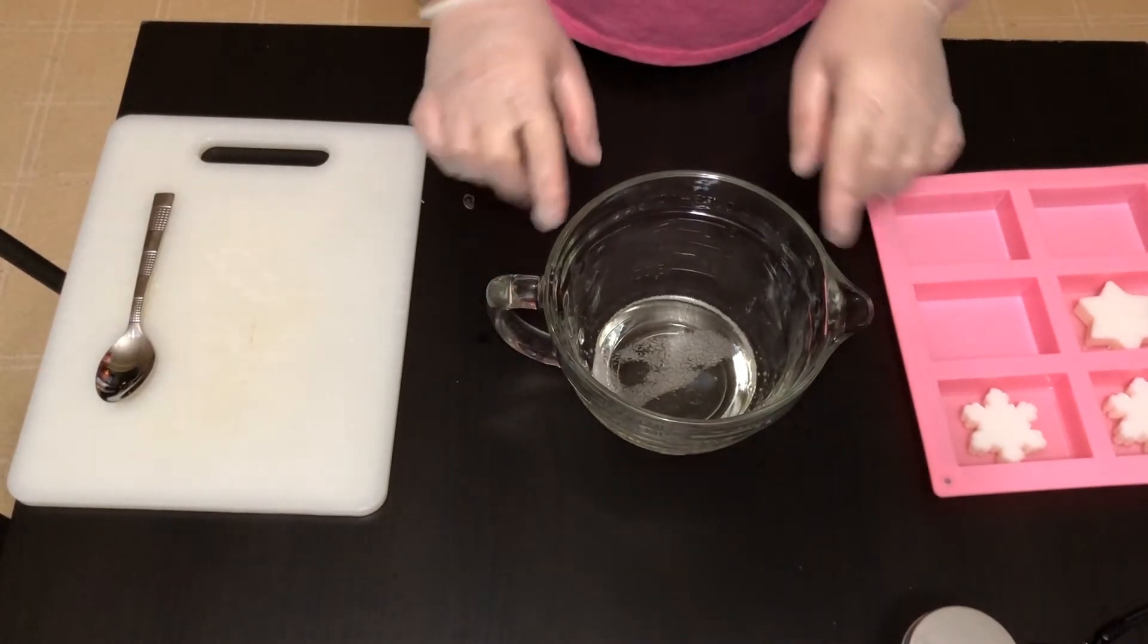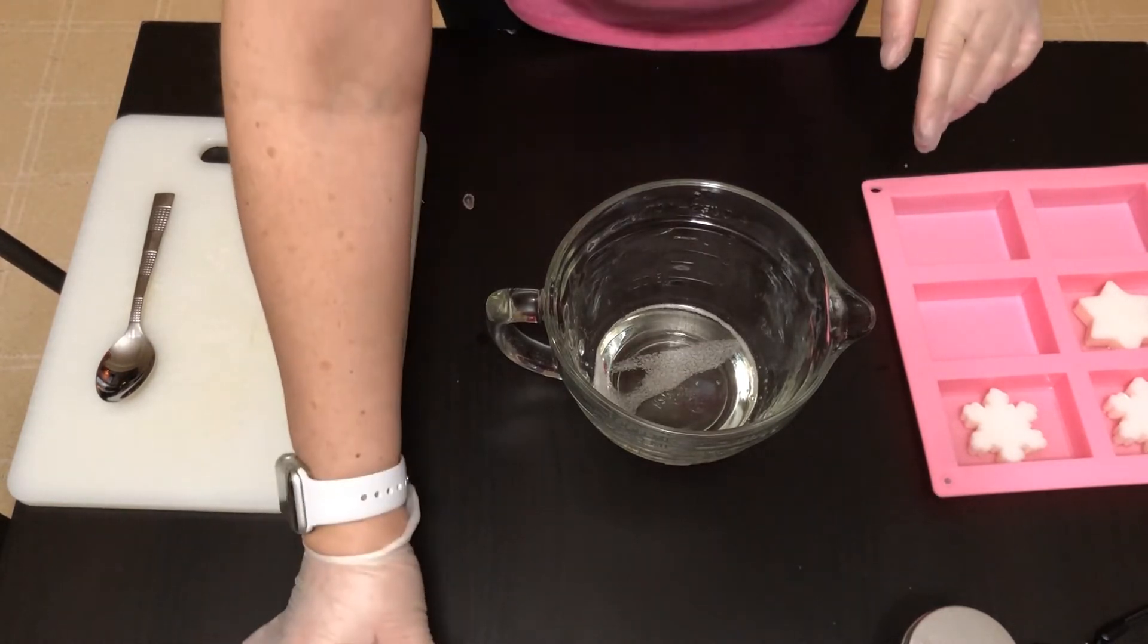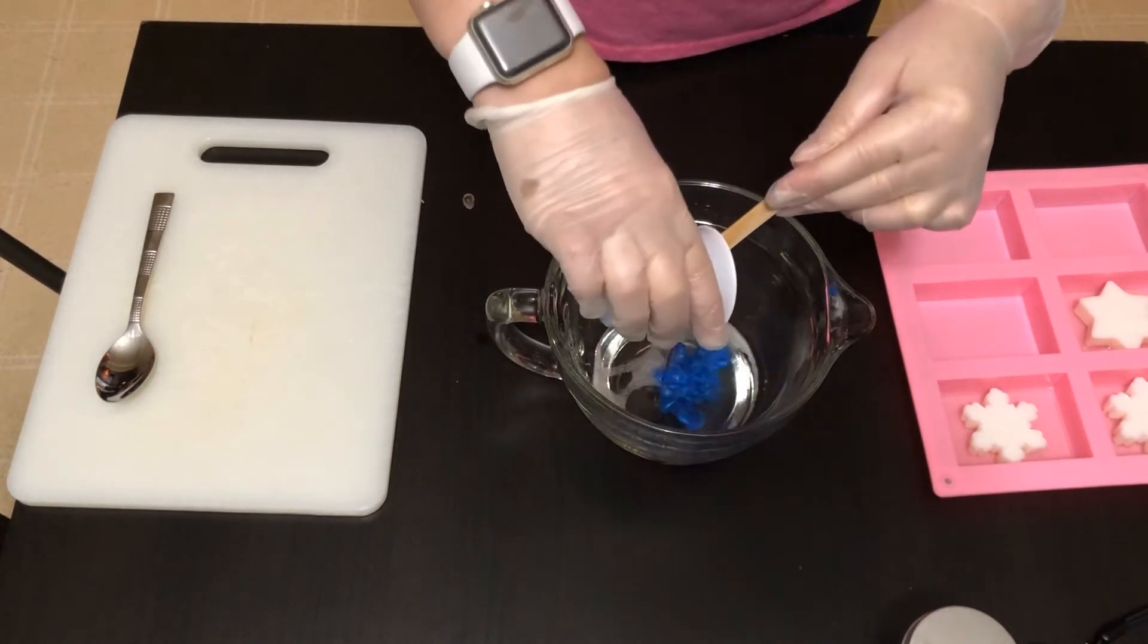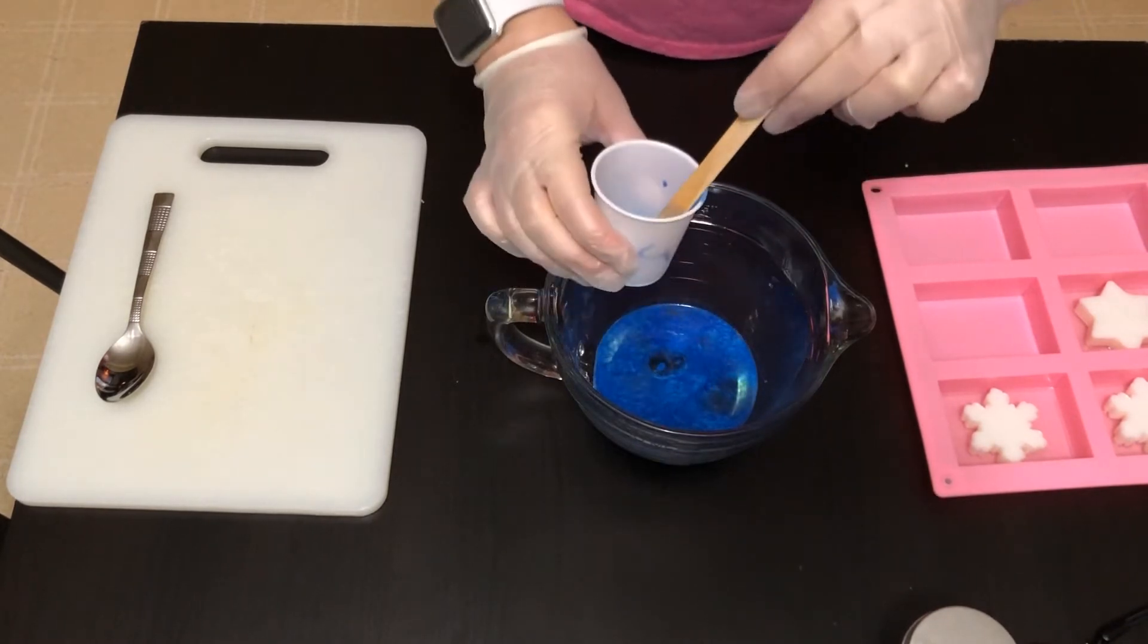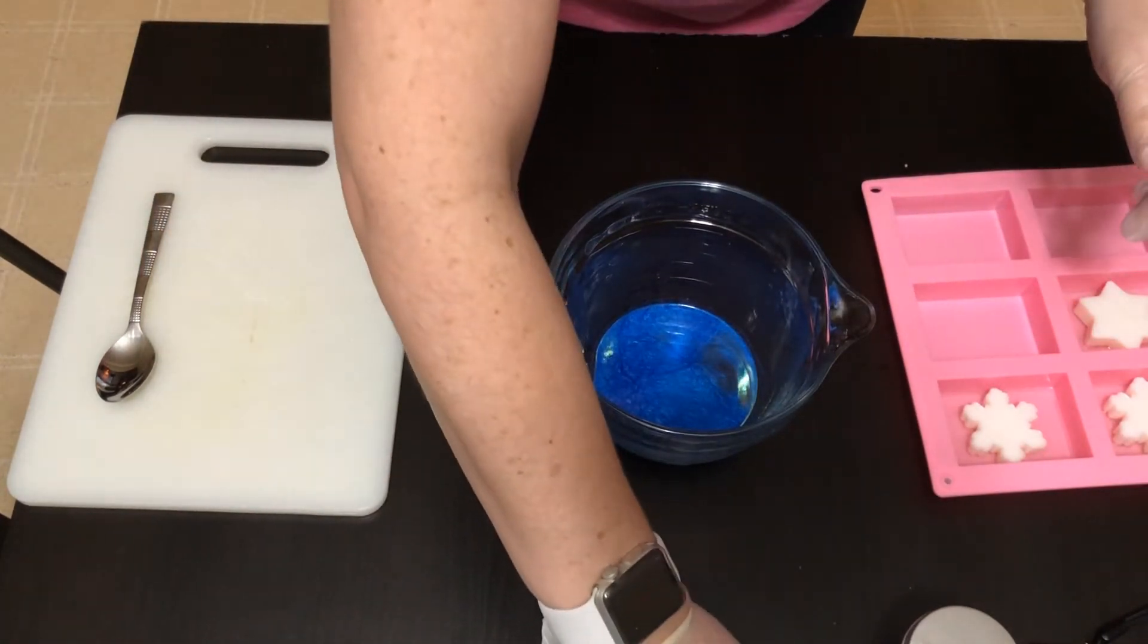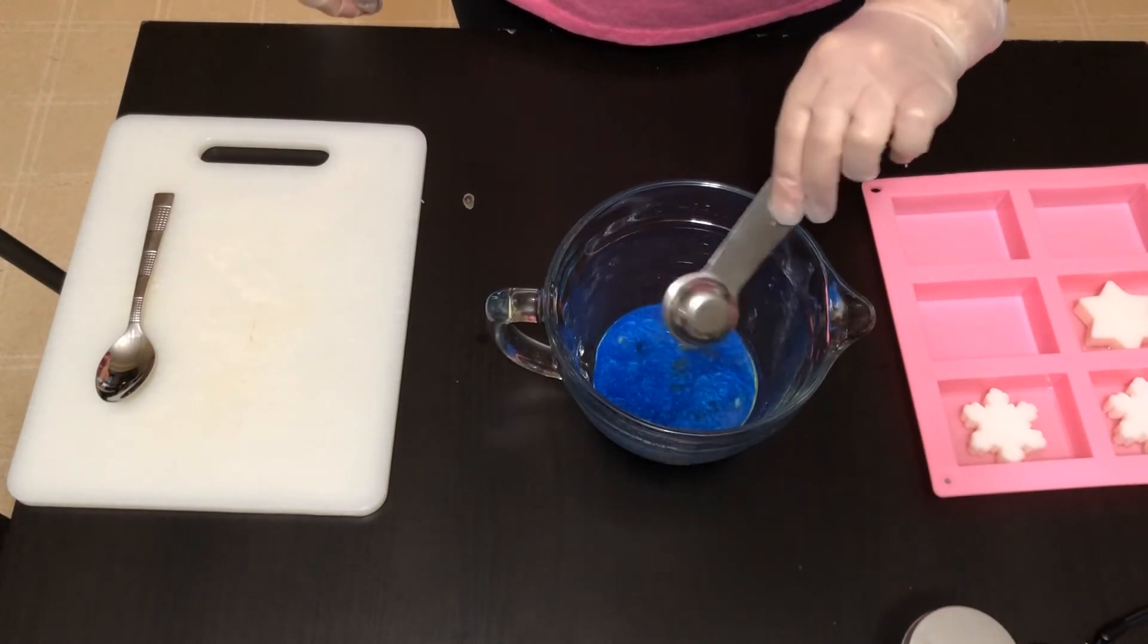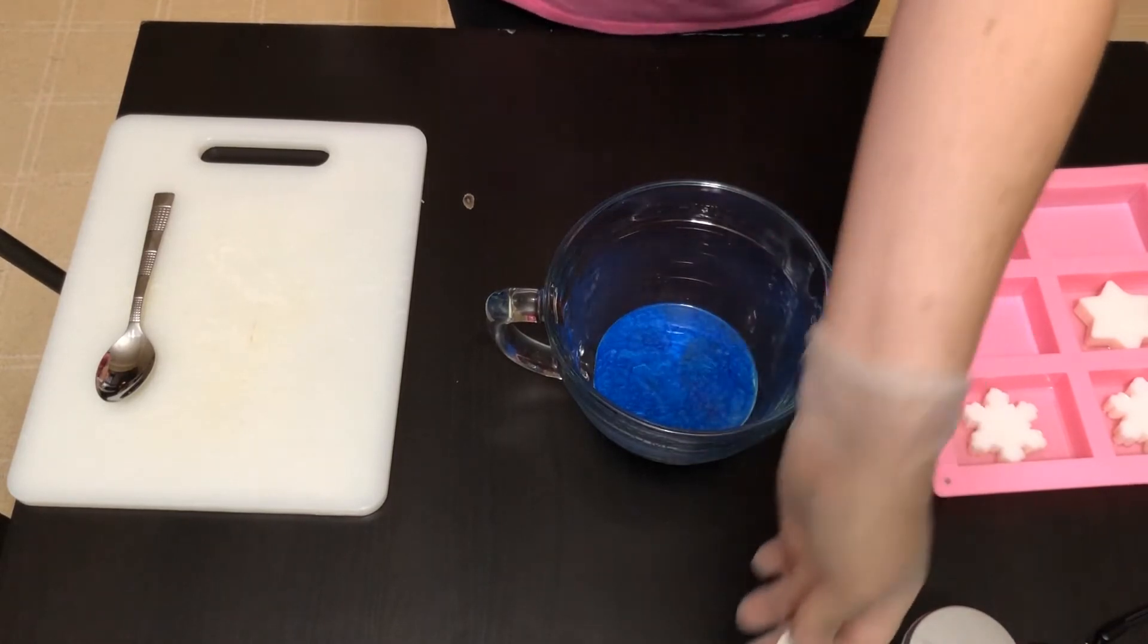Okay, so we have our melt and pour melted, so next I'm going to go ahead and put in our blue mica. I just mix that up with a little rubbing alcohol and the rubbing alcohol will evaporate out of the soap, and then our essential oil blend. Get that dumped in as well and I'll have the exact measurements listed out in the description box.